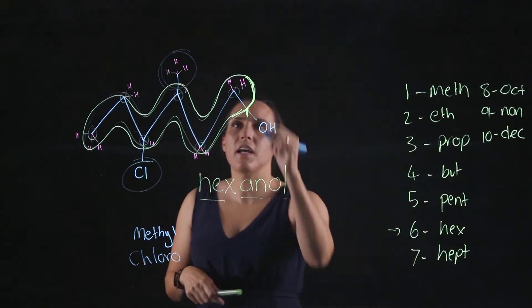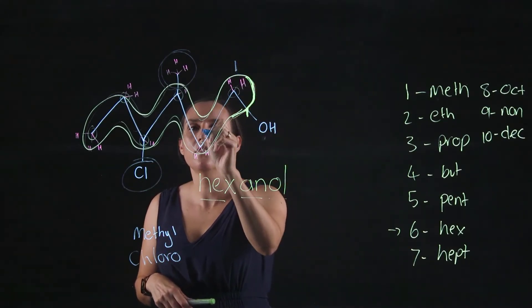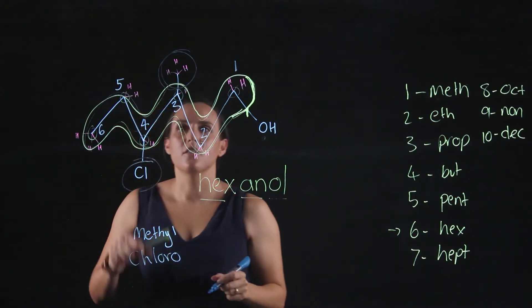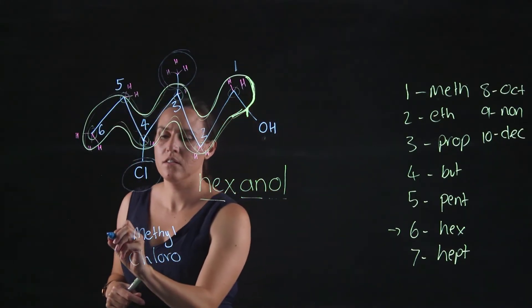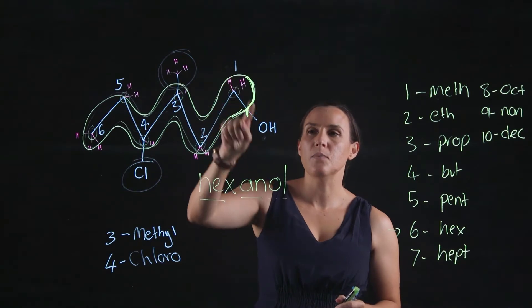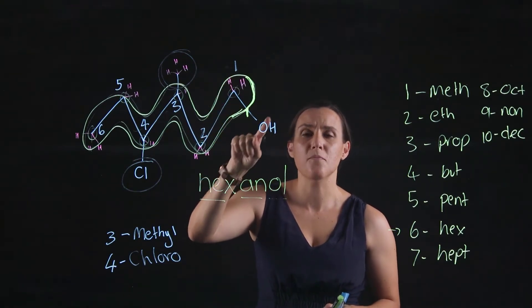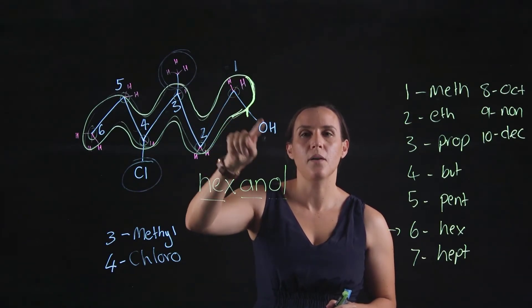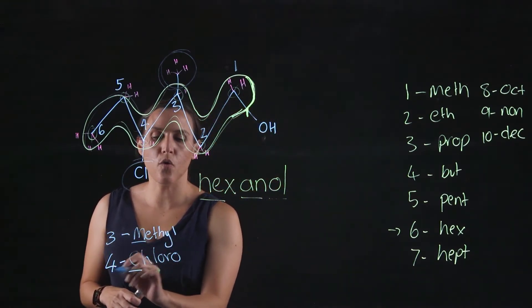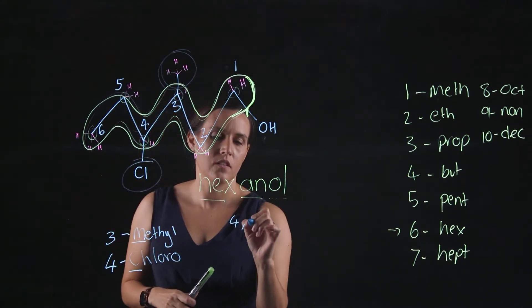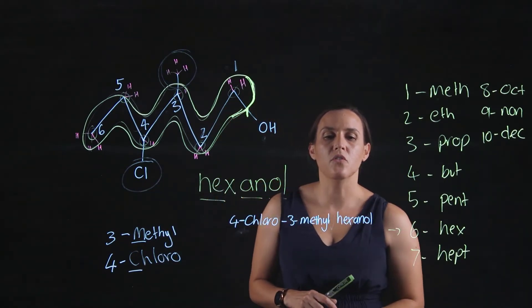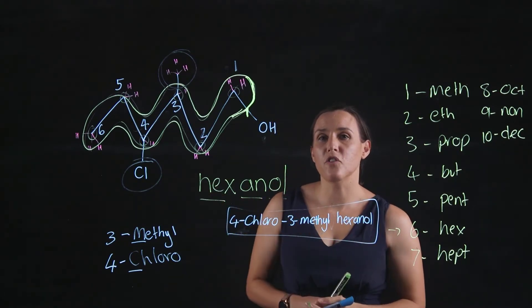So carbon number one, two, three, four, five, six — my methyl is off carbon three and my chloro is off carbon four. The reason this is carbon one is because that's where the alcohol is attached and it's the highest priority, so my numbering needs to start from the carbon attached to that alcohol. Putting all the pieces together alphabetically, it will be 4-chloro-3-methyl hexanol.